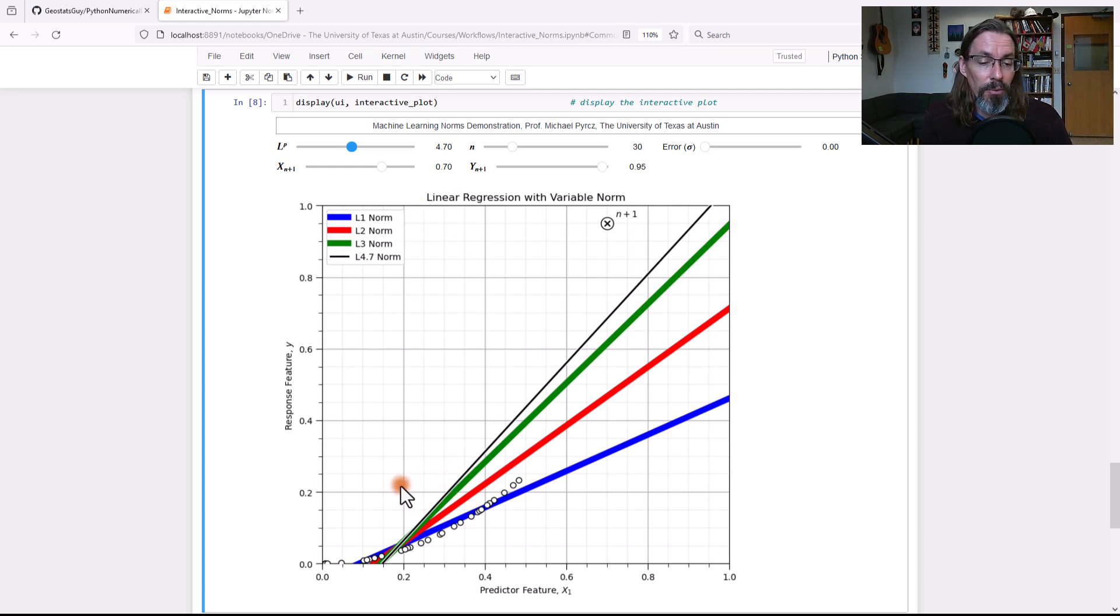And we can see we're getting a pretty poor fit with the majority of our data because of that. Okay, there's a lot of other things you can do with this dashboard. I wanted to keep this discussion really short. But if you want, you can increase more data. You can also play with the outliers I just did. You can change the norm.